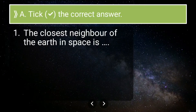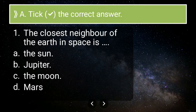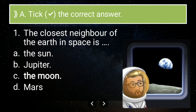The first MCQ: which is the closest neighbor of the earth in space? The options are the Sun, Jupiter, Moon, and Mars. The correct option is obviously the Moon — the Moon is the closest neighbor of Earth in space.